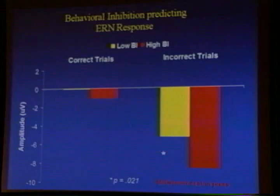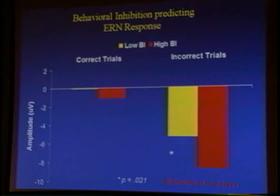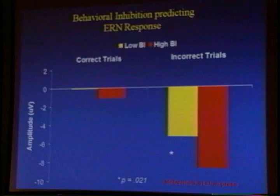The important difference is on the right there. The yellow are the non-behaviorally inhibited subjects. They're showing an ERN because you would expect to find an ERN. But the behaviorally inhibited subjects are showing a significantly greater ERN compared to the non-behaviorally inhibited subjects. That is, their brains are telling them something about their response monitoring more so than a non-behaviorally inhibited subject.